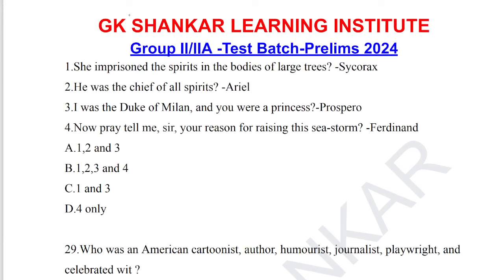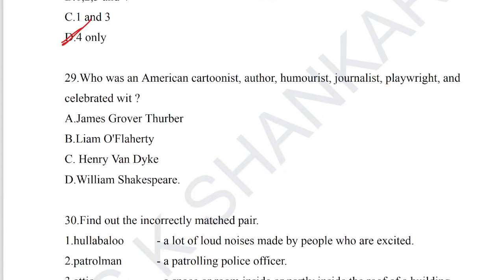Question number 28: find out the incorrectly matched pair of speakers. Statement 1: 'She imprisoned the spirits in the body of large trees' — Sycorax, correct. Statement 2: 'He was the chief of all spirits' — Ariel, correct. Statement 3: 'I was the Duke of Milan and you were the princess' — Prospero, correct. Statement 4: 'Now pray tell me sir your reason for raising this storm' — this dialogue was given by Miranda, so four is the incorrectly matched pair. Answer for question number 28.